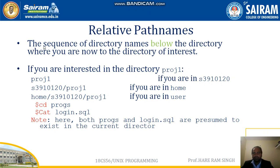We also have relative path names. A relative path name is the sequence of directory names from the directory where you currently are to the directory of interest. For example, if you are in s3910120 and project1 is present in s3910120, then you can reference it directly. If you are in home, then home/s3910120/project1 is the path. Note that both probes and login.sql are presumed to exist in the current subdirectory.